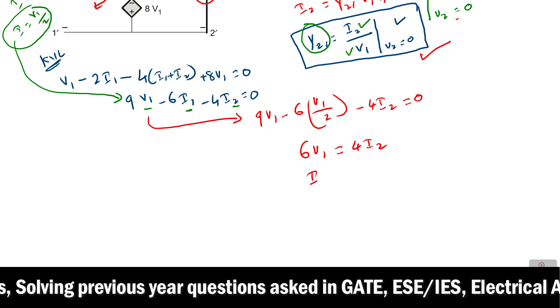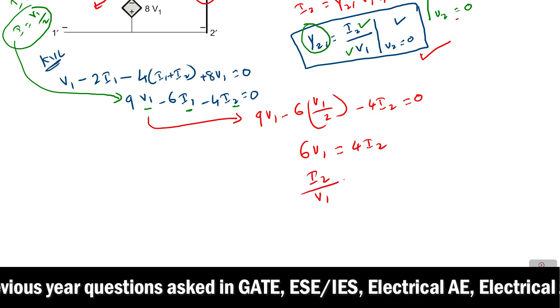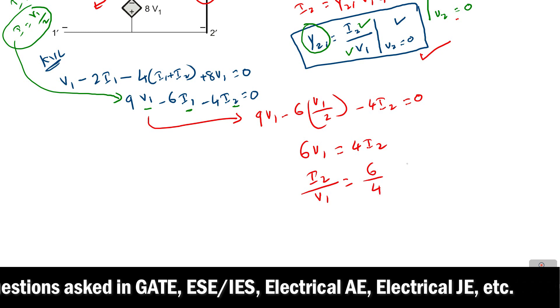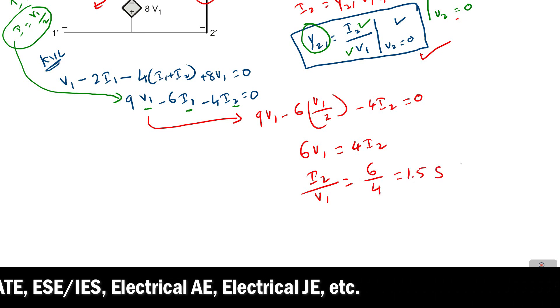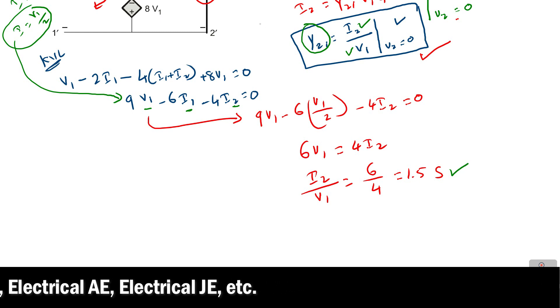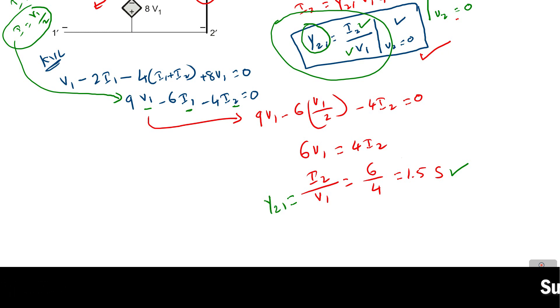That's it, this is Y21 because here Y21 equals i2 by v1. So this is nothing but Y21, so the answer is 1.5 siemens.